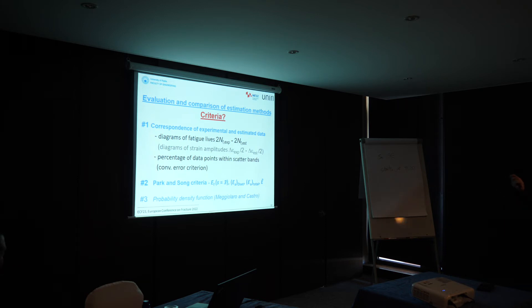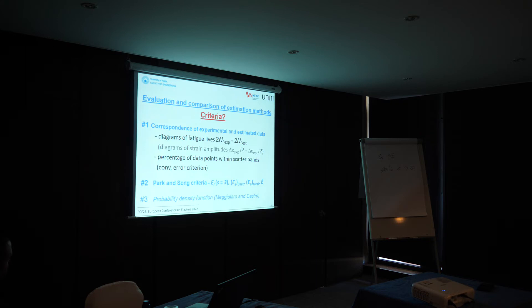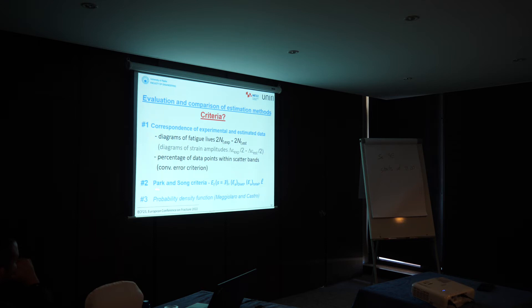The main topic is the criteria used for evaluation of estimation methods and the possibility to compare them mutually. The main approaches are: correspondence of experimental and estimated data — either a plot or a numerical value quantifying how well experimental and estimated values correlate. Another set of criteria are those proposed by Park and Song, which include a number of factors that in the ideal case have the value of one. There is also the probability density function used in the paper by Morrow and Kuester, but it has not been widely applied.